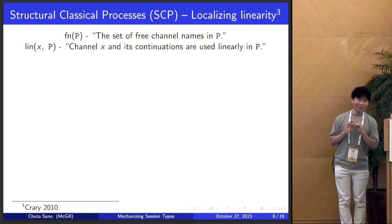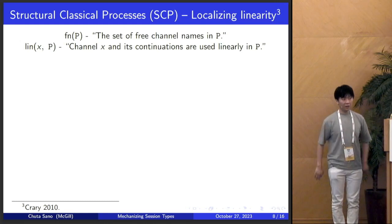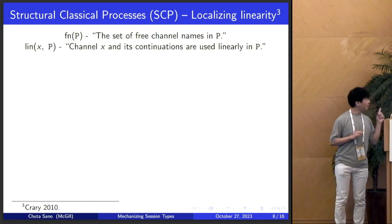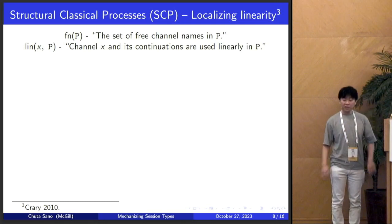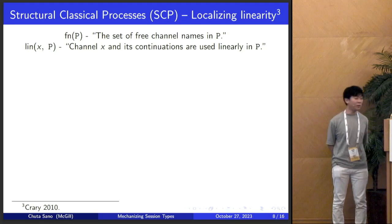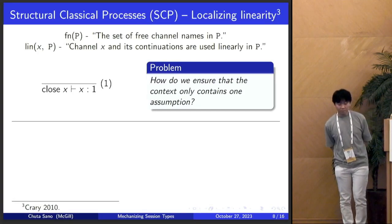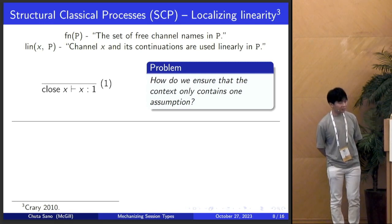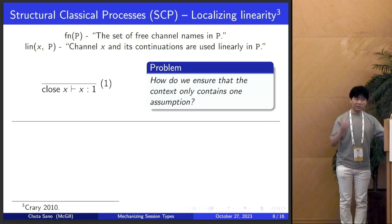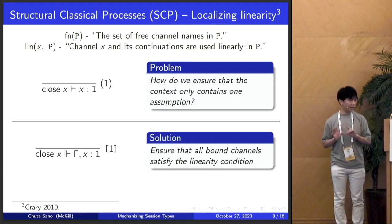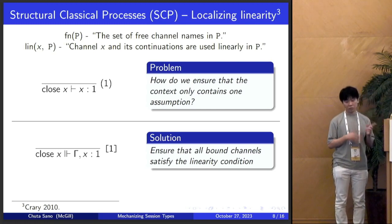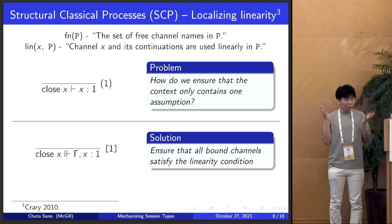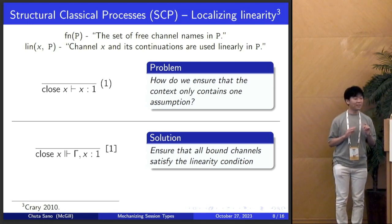Introducing structural classical processes, where we outright remove the linearity in the context, but instead use additional local predicates to ensure linearity. I'll be relying on the predicate 'lin x p', which informally means: channel x and its continuations are used linearly in process p. Going back to the close rule: in SCP the type judgment allows an arbitrary gamma — which seems a bit scary because what if we're dropping live channels? The linearity predicate is designed to prevent that.